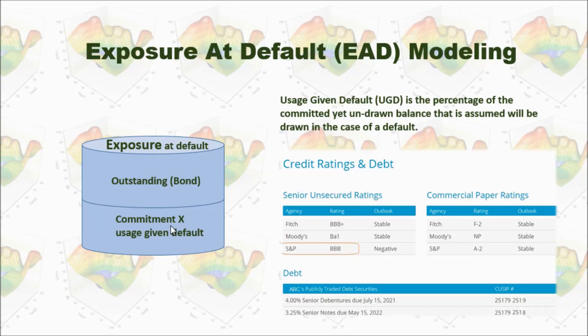The second part is the commitment. But not all the commitment is at risk. Only commitment times usage given default is at risk. So how do we calculate usage given default, UGD?